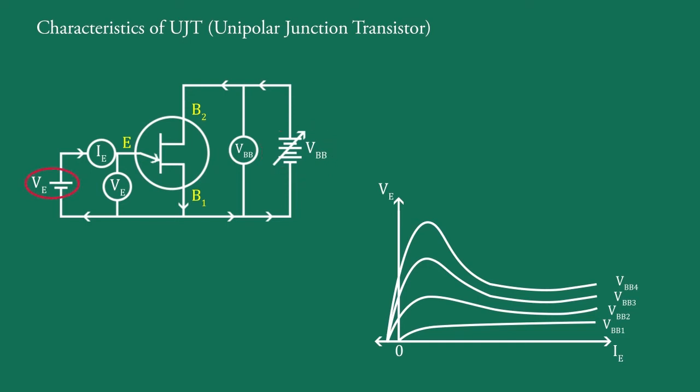At that time, IB2 equal to zero, that is current from base B2 to emitter is zero. Now if VBB is made suppose 5 volt, initially as VE increases from zero, slightly leakage current flows from base B2 to emitter.